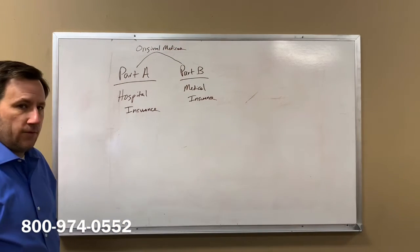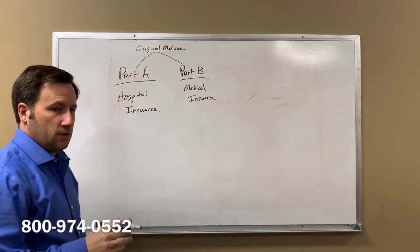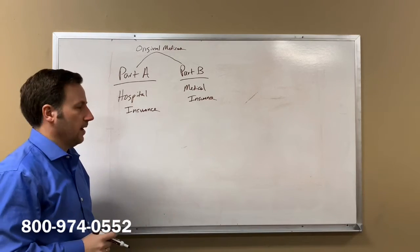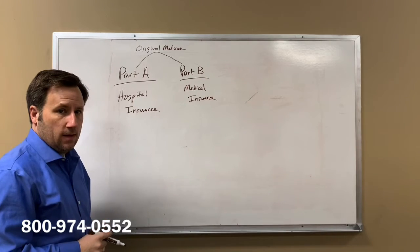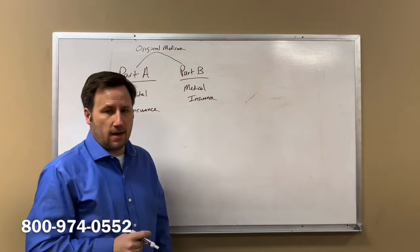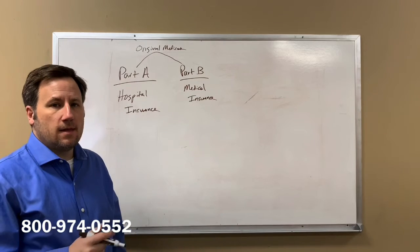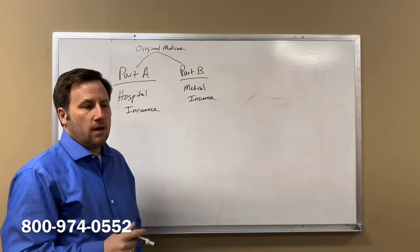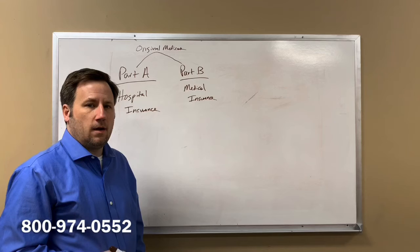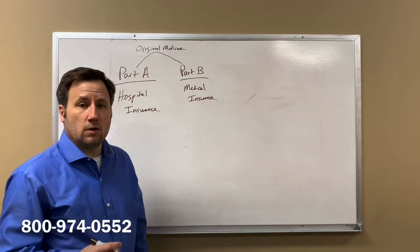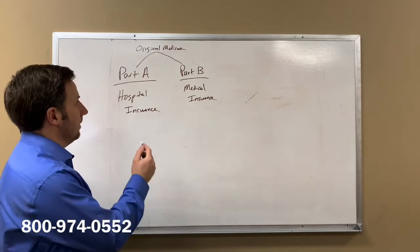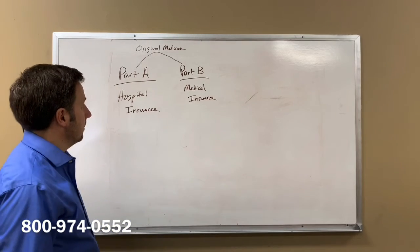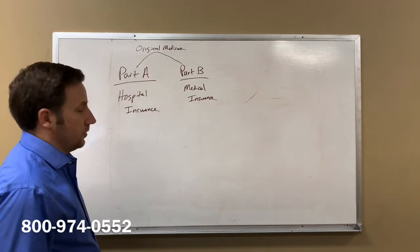When you first turn 65 or start to receive Social Security benefits, you would need to sign up for Original Medicare. You do that through the Social Security office. You can do that online, they have a toll-free number as well, and you can also visit your local Social Security office to find out about getting started with your Medicare insurance.